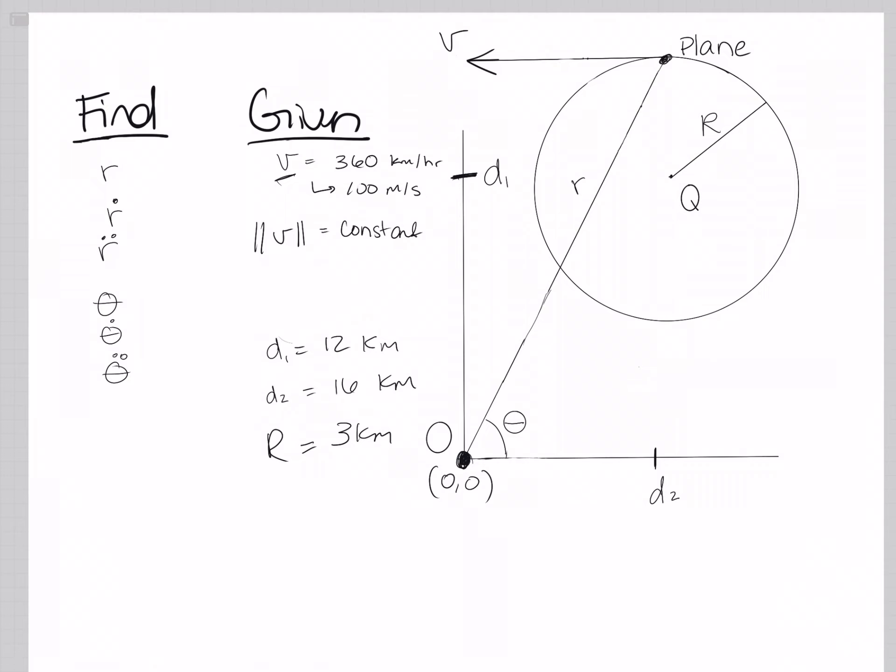We have velocity, which is going this way from the plane, and they've also told us a little bit about velocity. They've told us that the velocity is constant.